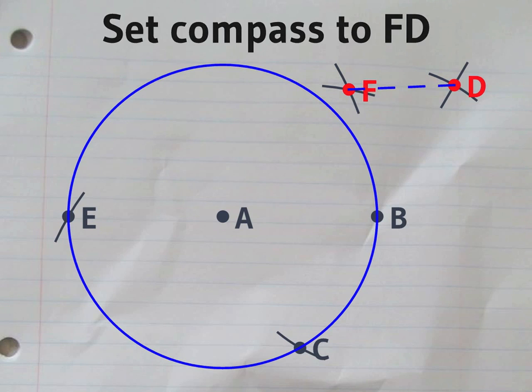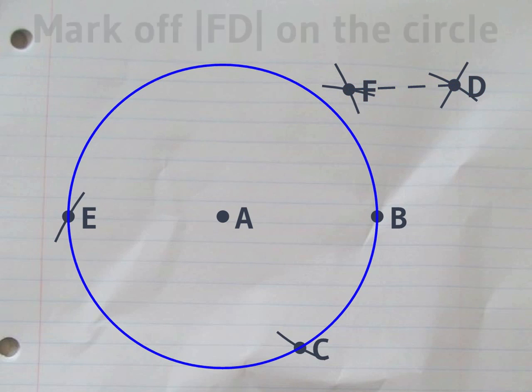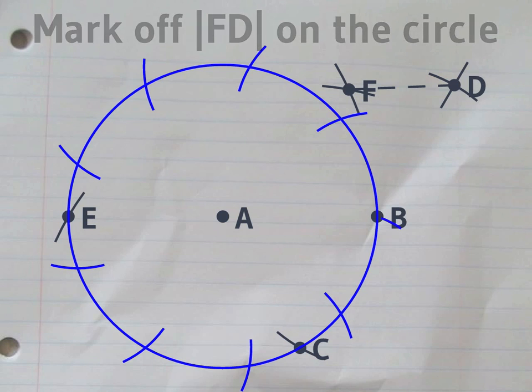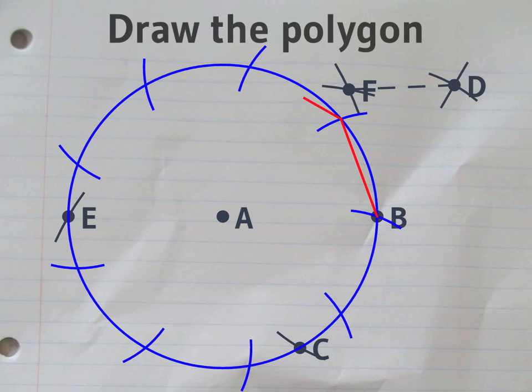The distance between F and D is almost exactly the length of the edge of a regular nonagon. Starting at one point, if you draw a series of little arcs, you'll then be able to draw a nonagon.